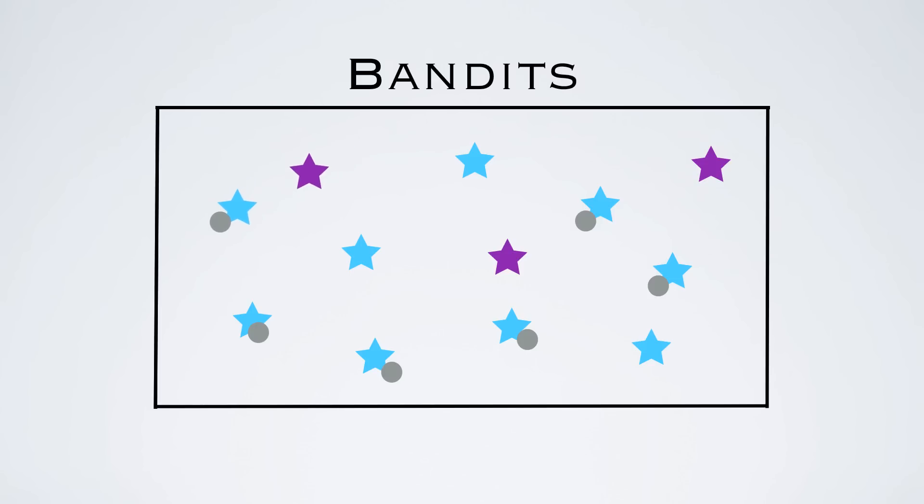Students can dribble around, try to get away from a bandit, they can pass it to each other, but if a bandit gets the ball and can kick the ball and it hits the outside wall, then that ball is taken out of the game.